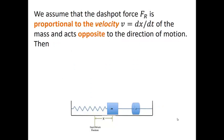We further assume that the dashpot force that we're denoting by F sub R is proportional to the velocity of the mass, and that it also acts opposite to the direction of motion. So then we can write F sub R as minus C times V, or minus C times X prime, where C is a positive constant.